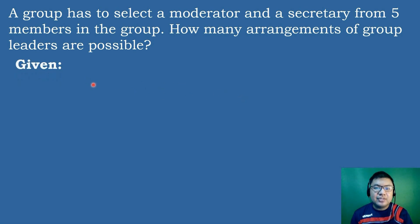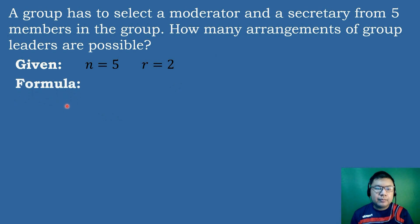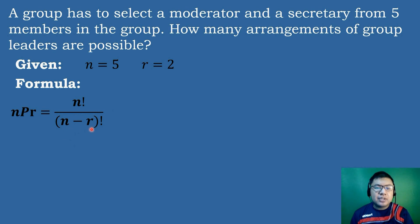Let's identify the given. The value of N is equal to 5 because there are 5 members in the group. The value of R is equal to 2 because we select the moderator and the secretary. We will use the formula of permutations: NPR equals N factorial over the quantity N minus R factorial.